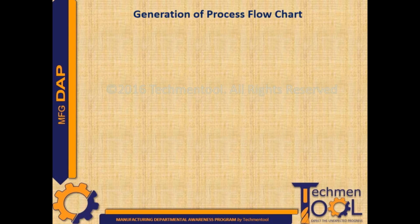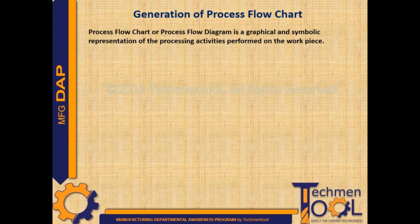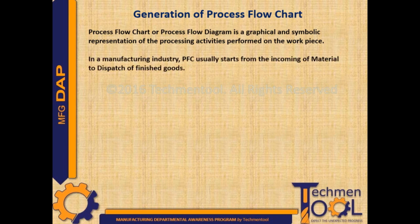The next step is generation of process flow chart. Process flow chart, or process flow diagram, is a graphical and symbolic representation of the processing activities performed on the workpiece. In a manufacturing industry, process flow chart usually starts from the incoming of material to the dispatch of finished goods.